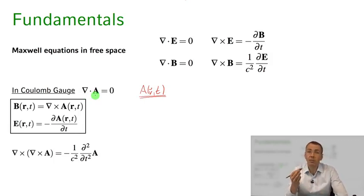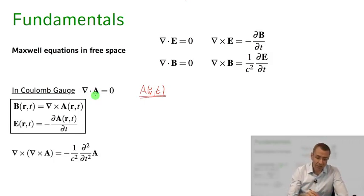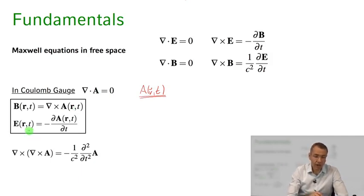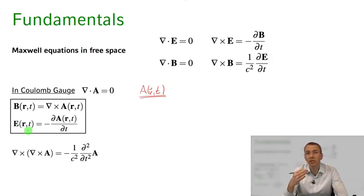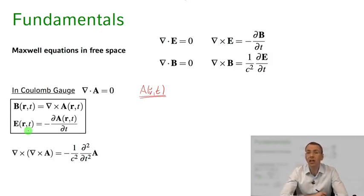We can calculate the magnetic field by simply taking the curl of A. We can calculate the electric field by taking the negative time derivative of A — so minus dA/dt gives us the electric field. Thus A contains all the information about the B and E fields in our system.